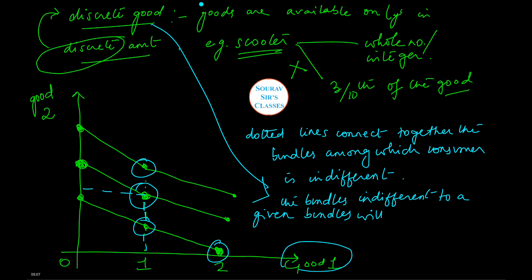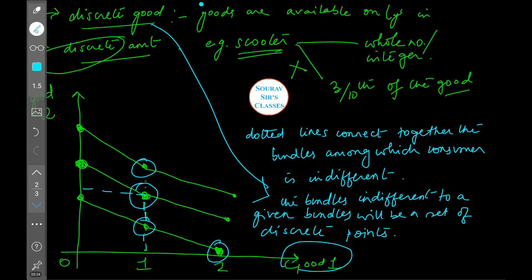Now, the bundles indifferent to a given bundle—that means we are talking about all these points—will be a set of discrete points. Now one thing should be kept in mind is that a commodity...